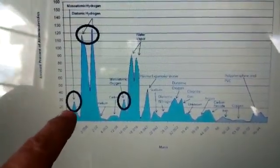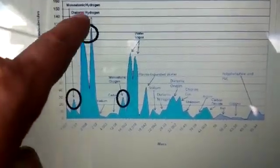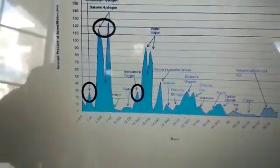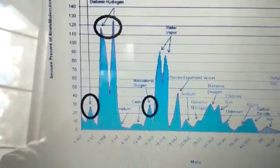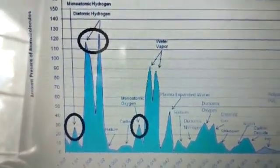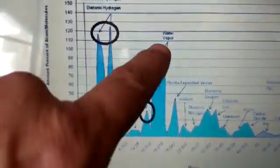As you can see, here's a percentage of monoatomic, diatomic hydrogen, and monoatomic oxygen. These play a super important role. Of course, water vapor too.